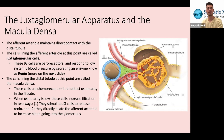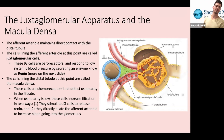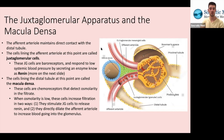The macula densa cells detect osmolarity in the filtrate. Specifically, when osmolarity is low, they increase filtration in two ways: first, they stimulate the JG cells to release renin; and second, they directly dilate the afferent arteriole to increase blood flow going to the glomerulus.